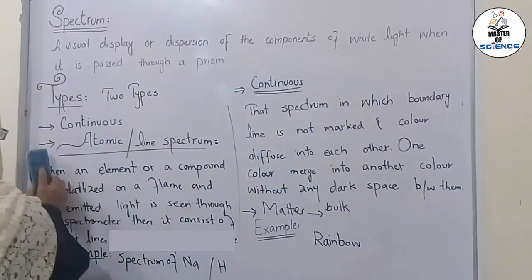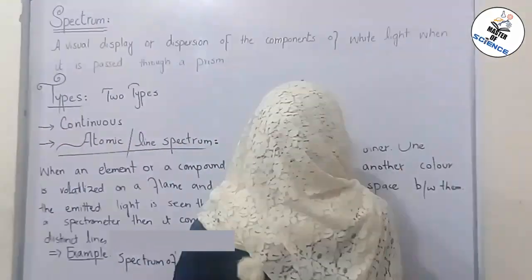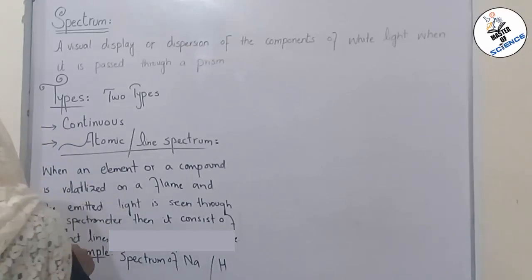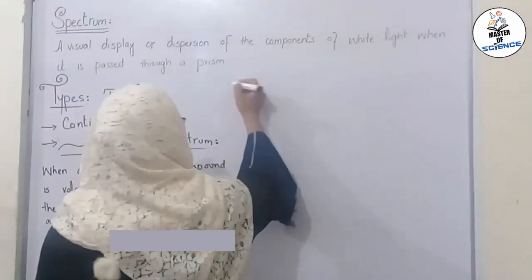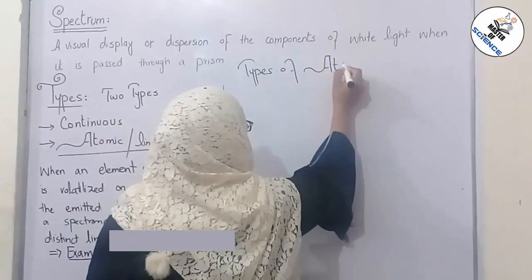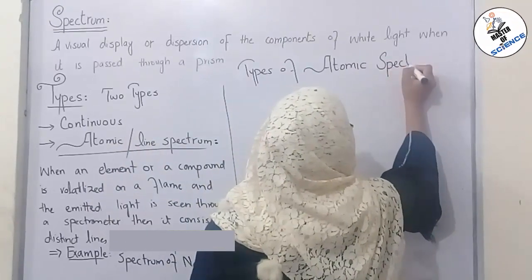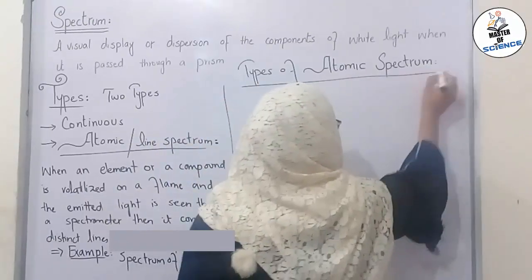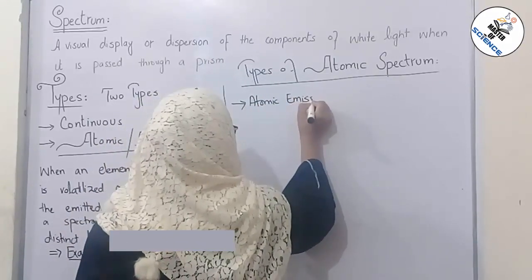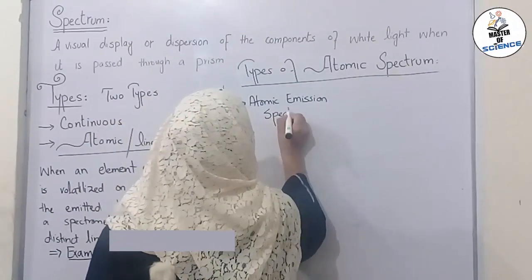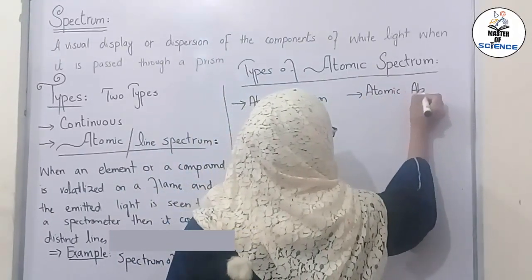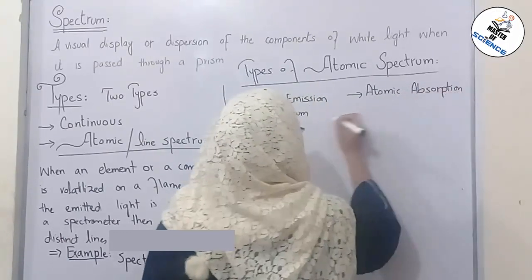Now we will move towards the types of atomic spectrum. Atomic spectrum has two types: first is atomic emission spectrum, and second is atomic absorption spectrum. The difference lies in the words emission and absorption.